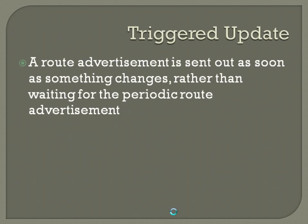Triggered updates assist with routing as well. Routing advertisements go out periodically — for RIP it's every 30 seconds. In addition, if a router receives an advertisement for something that's changing, it can send out another update immediately rather than waiting for the periodic route advertisement. So if a link goes down or you learn about a new route, a triggered update will be sent out so all routers immediately know about the change.